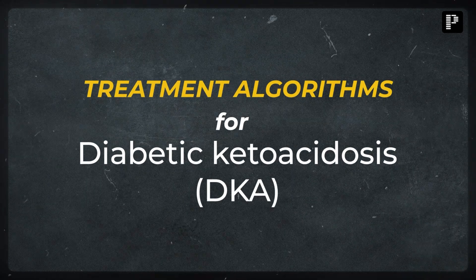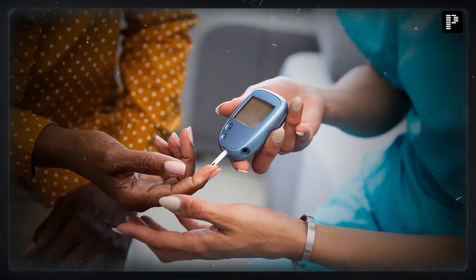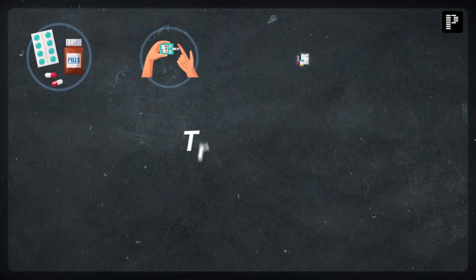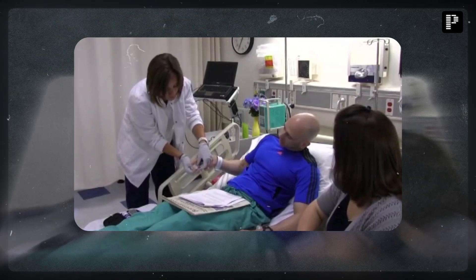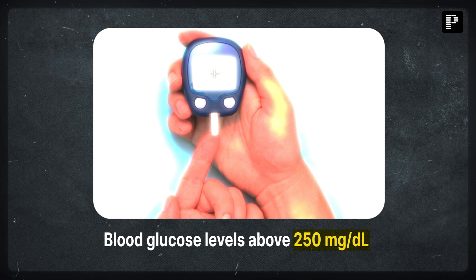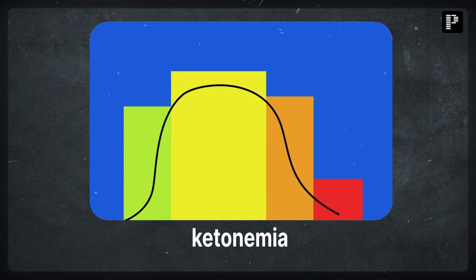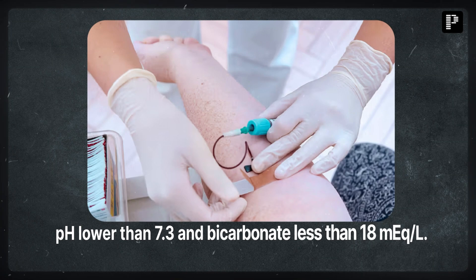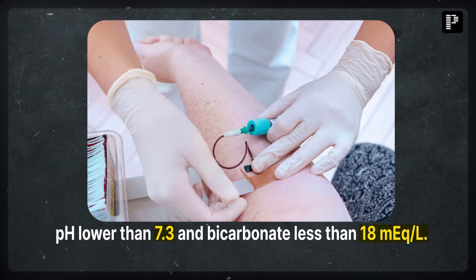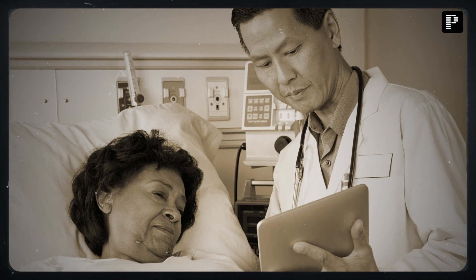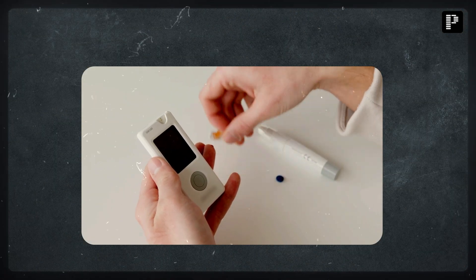Diabetic ketoacidosis, or DKA, is a serious complication of diabetes. Here is a treatment algorithm for the same. First, here's what we look for: blood glucose levels above 250 milligrams per deciliter, ketonemia, and metabolic acidosis with a pH lower than 7.3 and bicarbonate levels less than 18 milliequivalents per liter. Once DKA is confirmed, evaluate the severity.